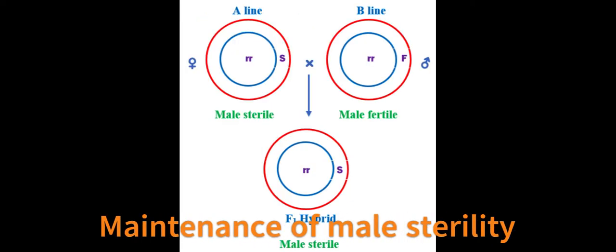Cytoplasmic male sterility is maintained by crossing a male sterile A line with an isogenic male fertile B line. The male sterile A line carries the cytoplasmic factors responsible for male sterility.